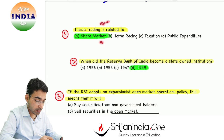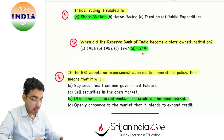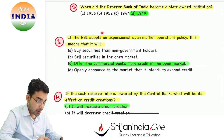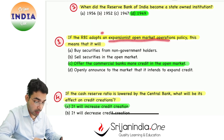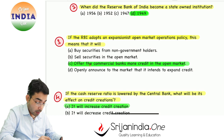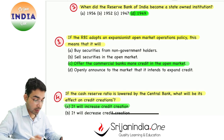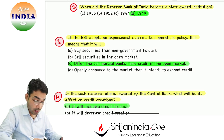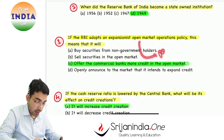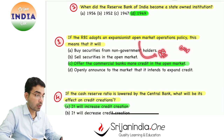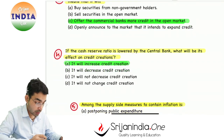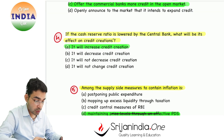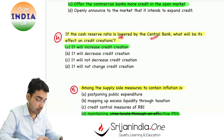Insider trading is related to share market. Reserve Bank of India was nationalized in 1949. If RBI is following an expansionist open market operation policy, it means commercial banks are getting more credit. It means Reserve Bank of India is following an easy monetary policy, trying to increase liquidity. If the cash reserve ratio is lowered by the central bank, it will increase credit creation.